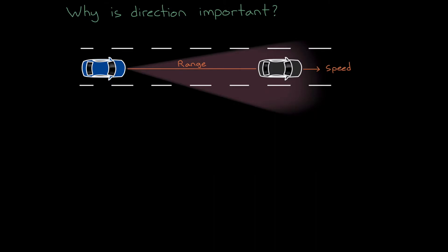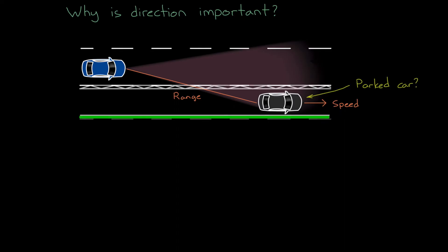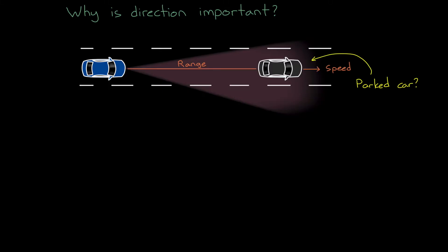However, the adaptive cruise controller wouldn't work too well if it couldn't determine if that detection came from an object in the same lane as itself, or the lane next to it. Or worse still, what if it couldn't determine the difference between a car parked on the side of the road and a car stopped in its lane? So angle determination along the azimuth is important.